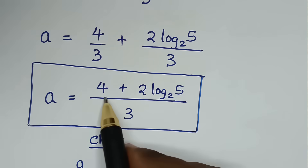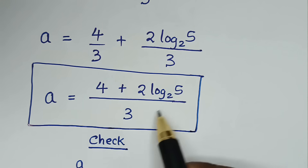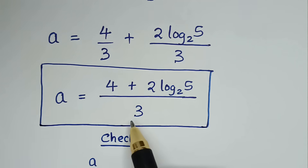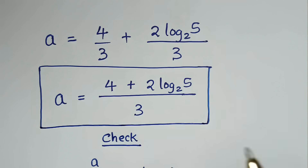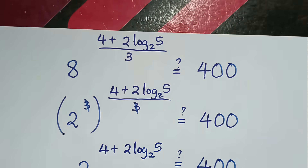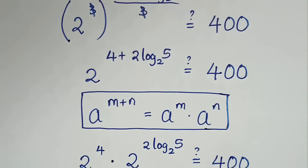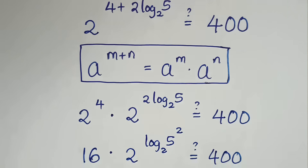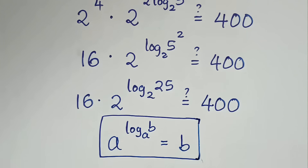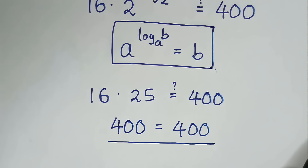The value of a is (4 + 2·log base 2 of 5) over 3, which is in the simplest form. Thank you, don't forget to subscribe to my channel and see you in the next video, bye bye.